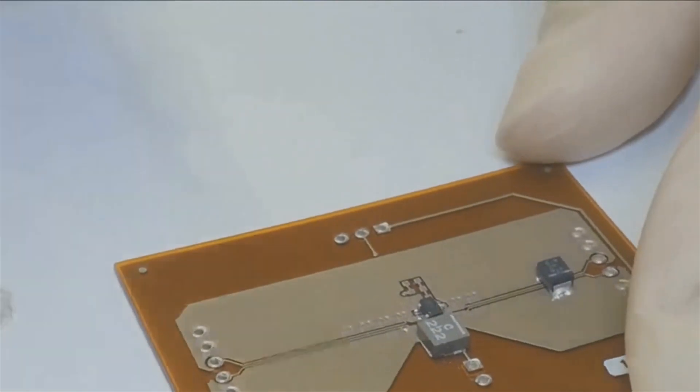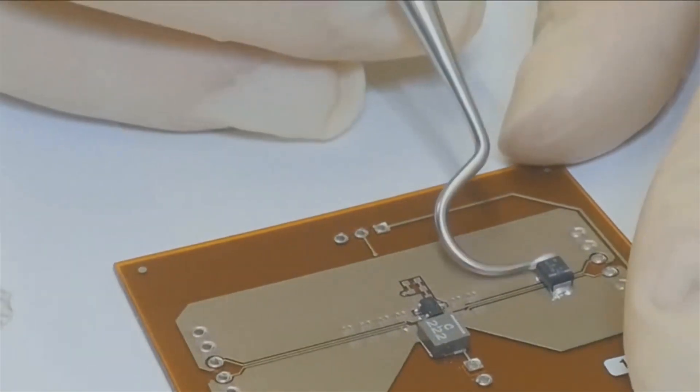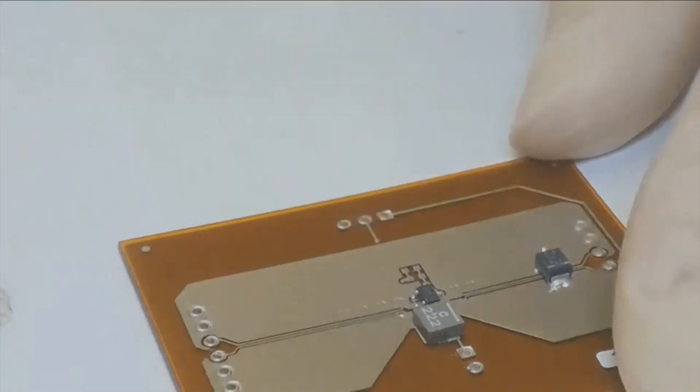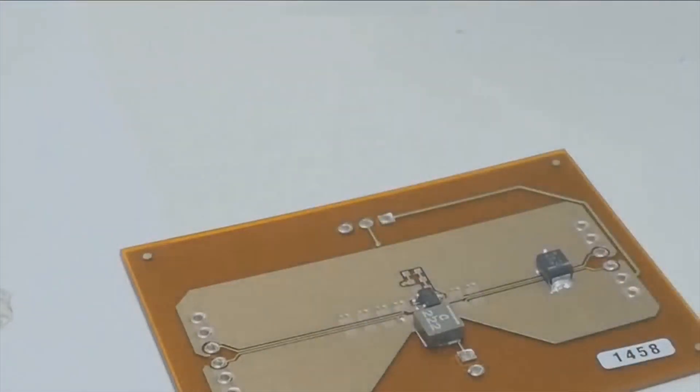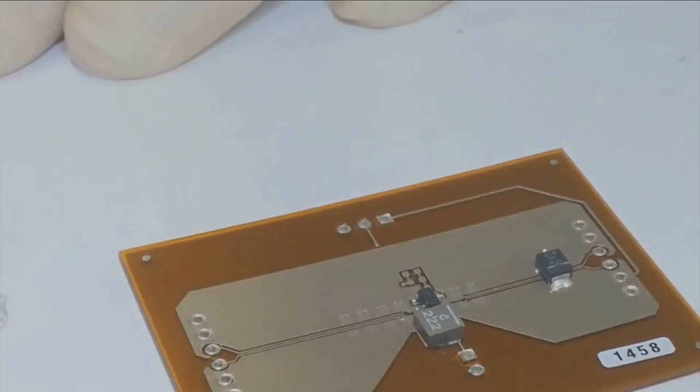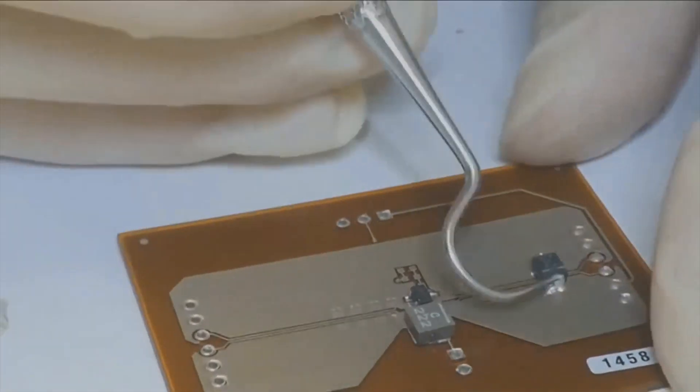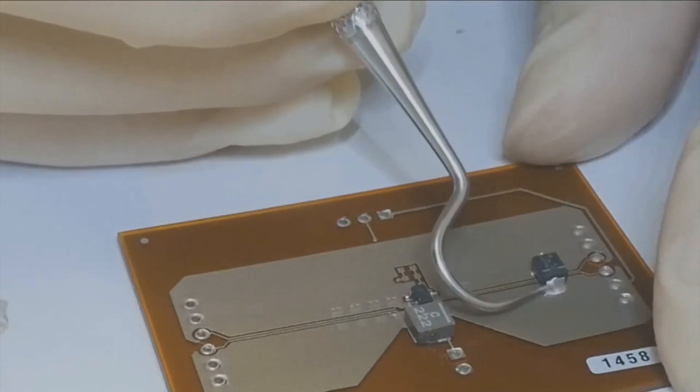Silver epoxy is best used on passive components that do not have pads that could short together through epoxy squeeze-out. When placing a component, always apply a small amount of epoxy to put the component in place and add more epoxy afterwards.